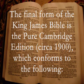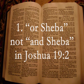The pure Cambridge edition conforms to the following tests. 1. 'Or Sheba,' not 'And Sheba,' in Joshua 19, verse 2. 2. 'Sin,' not 'Sins,' in 2 Chronicles 33, verse 19.